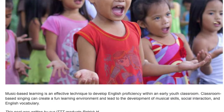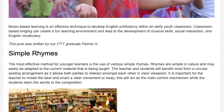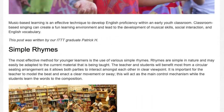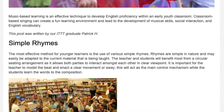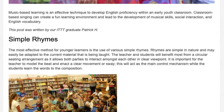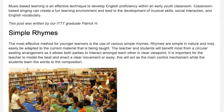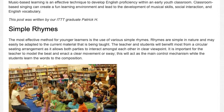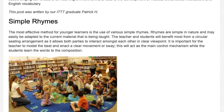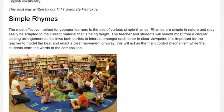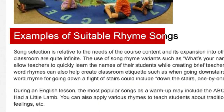This post was written by RITT graduate Patrick H. Simple Rhymes: The most effective method for younger learners is the use of various simple rhymes. Rhymes are simple in nature and may easily be adapted to the current material being taught. The teacher and students will benefit most from a circular seating arrangement, as it allows both parties to interact in clear viewpoint. It is important for the teacher to model the beat and enact a clear movement or sway, which will act as the main control mechanism while students learn the words to the composition.